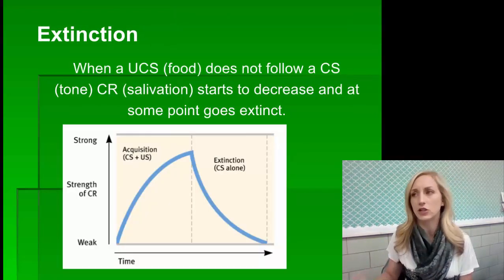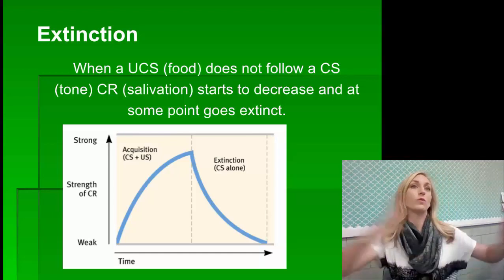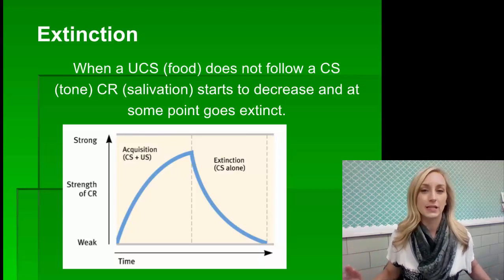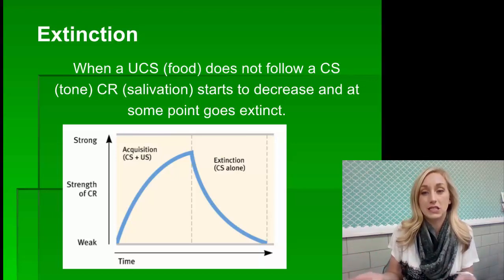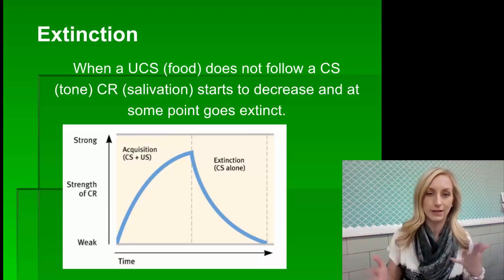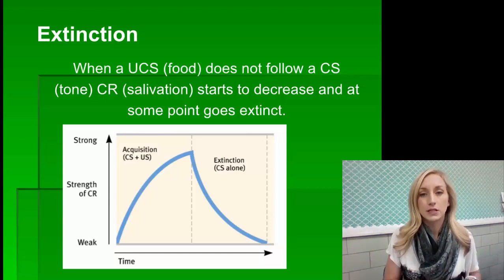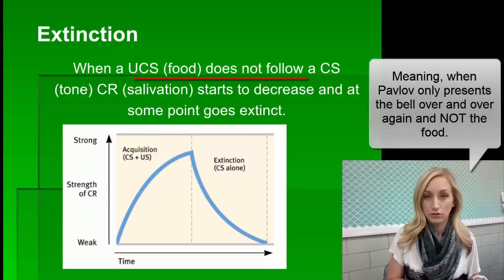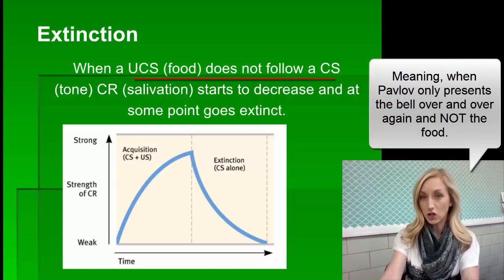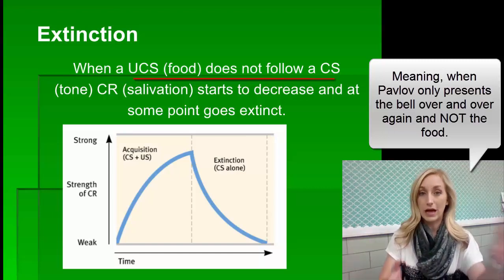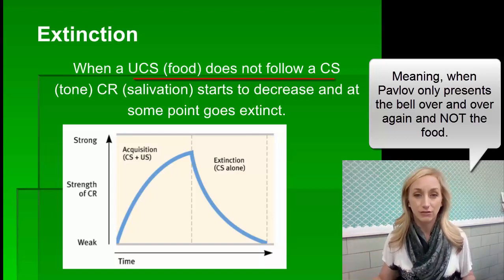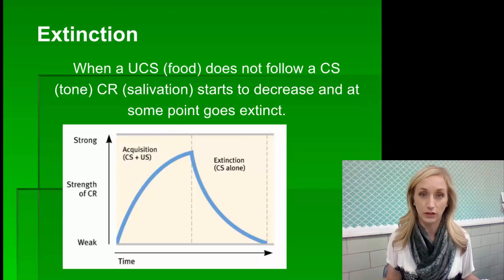Now let's talk about extinction. Like when an animal goes extinct, they disappear forever. With behavior, when a behavior goes extinct, the response and conditioning goes away. When an unconditioned stimulus like food is not presented to the subject — like the dog — and does not follow the conditioned stimulus like the bell, then the conditioned response starts to decrease and at some point goes extinct.